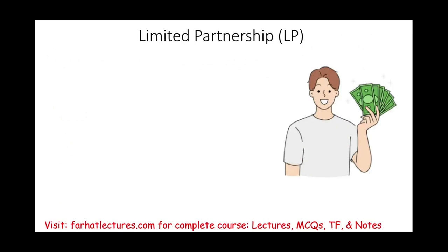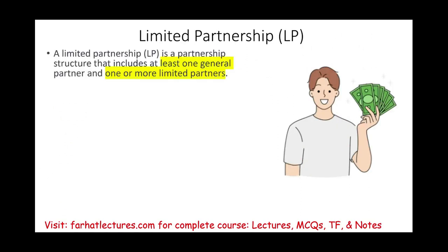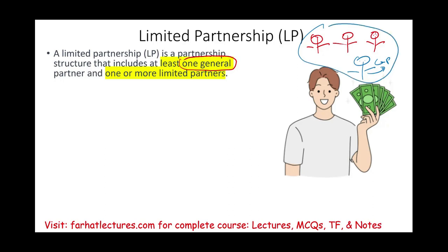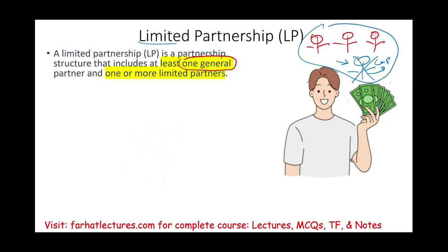Limited partnership is a little bit different. In a limited partnership you have to have at least one general partner. You cannot have a limited partnership without one general partner — if the general partner is gone, the limited partnership no longer exists. Why? Because you need that individual to be responsible for the debt of the company. You also need at least one limited partner. So in a limited partnership: at least one general partner and at least one limited partner.